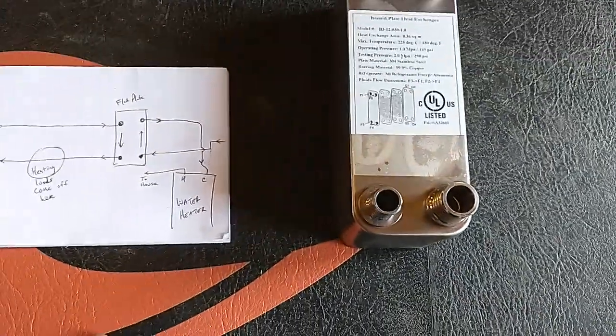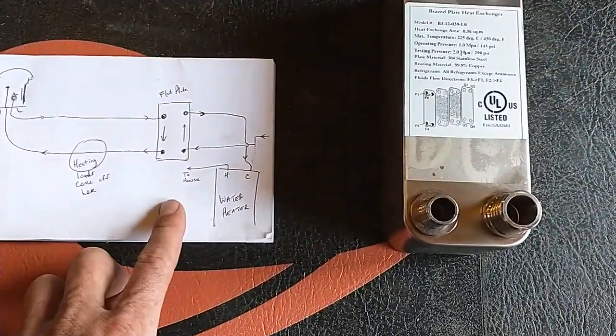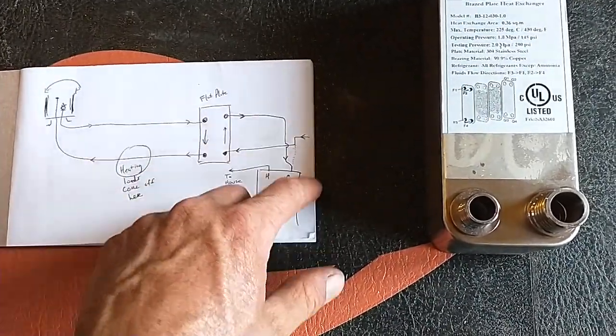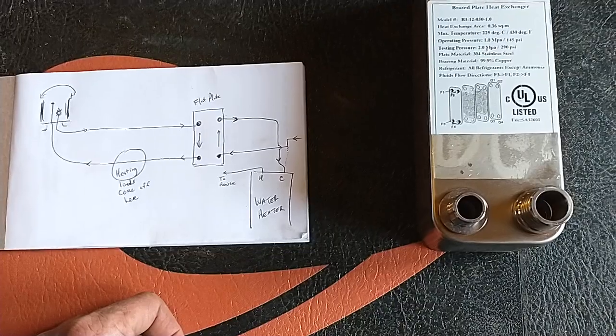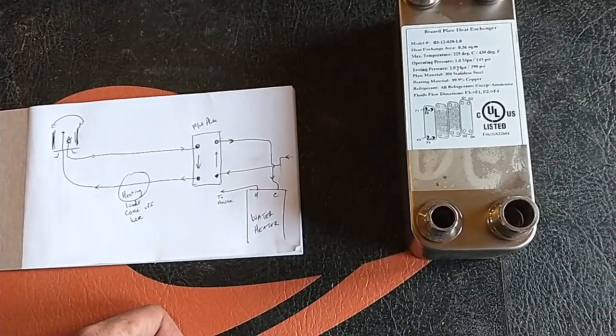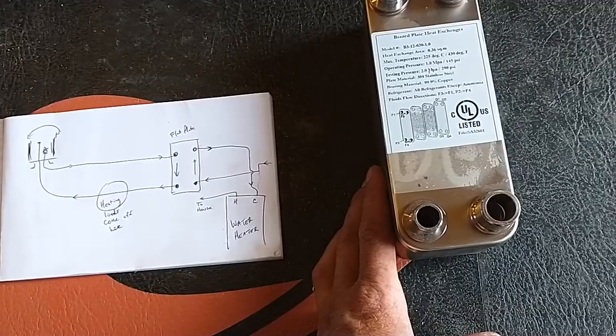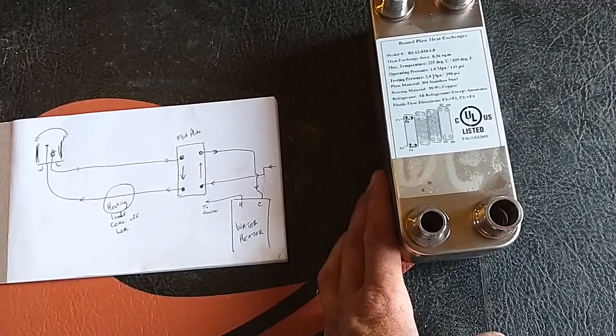If you let your fire go out, summertime, cold water just feeds through, stays cold, and your electric elements are right there to back it up. Nothing you got to do. That is a super simple way to hook up domestic hot water on basically any brand of outdoor furnace.